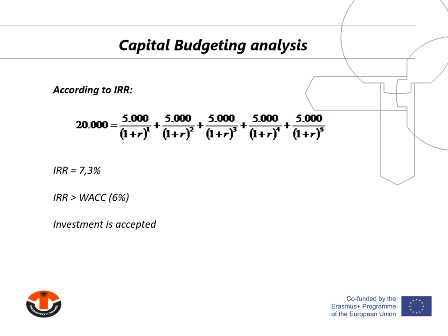Regarding the internal rate of return method, the risk manager finds the rate at which the present value of 5,000 euro per year for five years equals 20,000 euro. The IRR is the rate that satisfies this equation. Using interest tables or financial calculators, the problem is easily solved — the rate of return that satisfies the equation is 7.3 percent. As the IRR of 7.3 percent is greater than the firm's cost of capital of 6 percent, the investment proposal is accepted according to the IRR method.